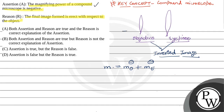Now, the reason states that the final image formed is erect with respect to the object. But the final image is not erect — the final image is also inverted. So the final image which is formed is inverted with respect to the object.